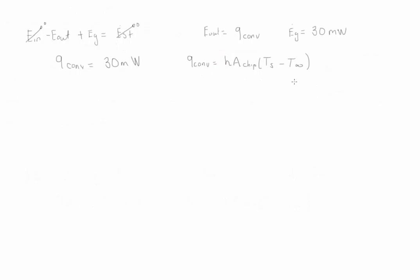What we're looking for in this expression is the value of the surface temperature, which is constant throughout the chip. So we need to find the convection coefficient and the area of the chip.